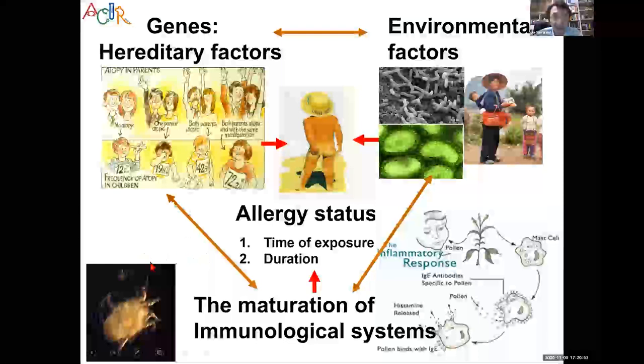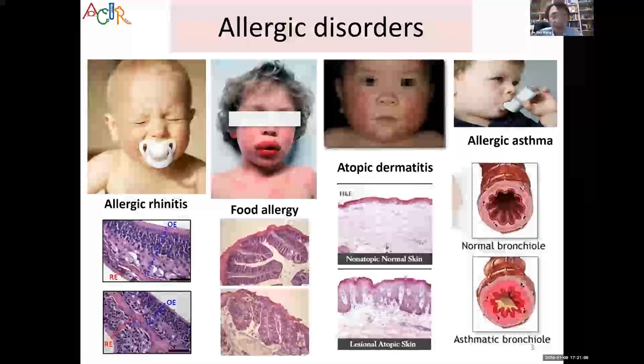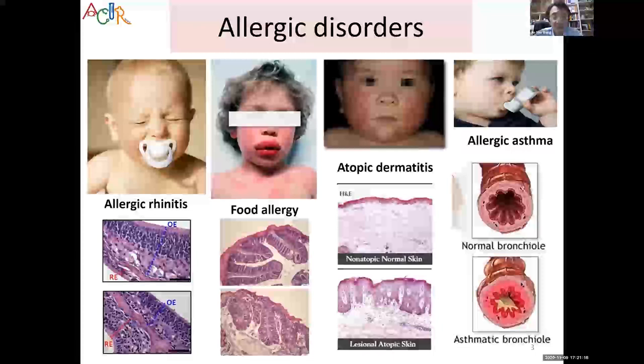The gene and environmental factors interact together to affect the development of our immunological system, causing it to deviate toward the so-called Type 2 immune response. All allergy diseases belong to the Type 2 immunological response, which produces a lot of IgE and also Type 2 cytokines including IL-4, IL-5, and IL-13.